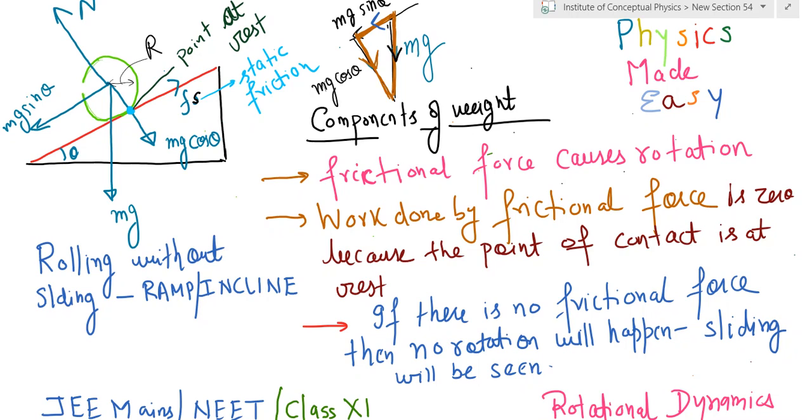If this point is at rest, the interpretation of this being at rest means that there is no work being done by the frictional force. So for emphasis, we are learning that friction causes this rotation, but the point in touch with the ramp is at rest, and therefore the work done by the frictional force is zero.